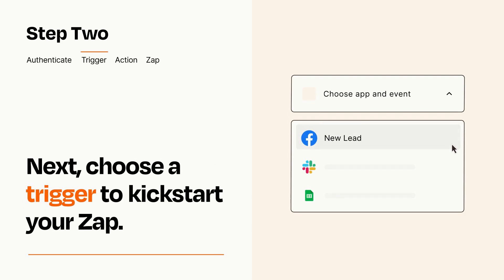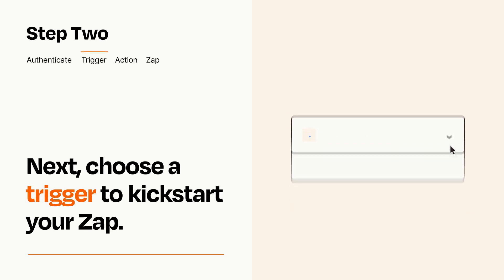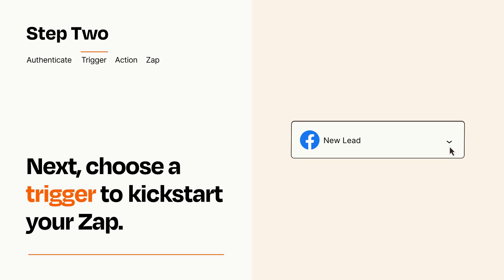Now let's set up your trigger, which is the event that starts your Zap. Pick the trigger event that you want from the list. When you set up this step, your Zap will pull in test data from your trigger app that you'll see later when setting up your action app.